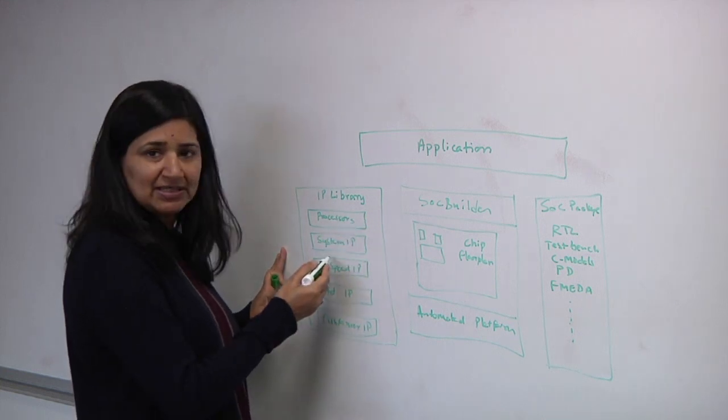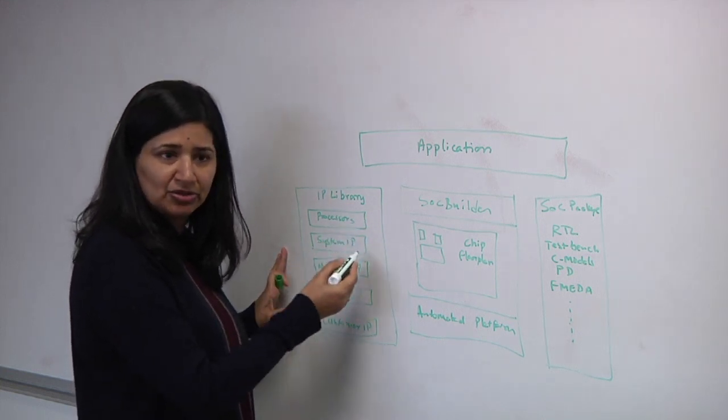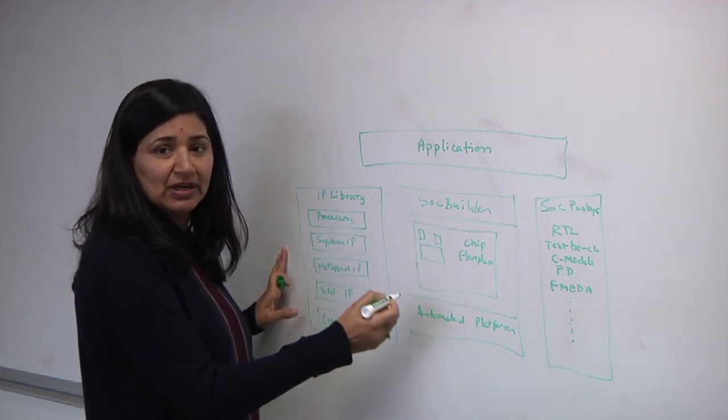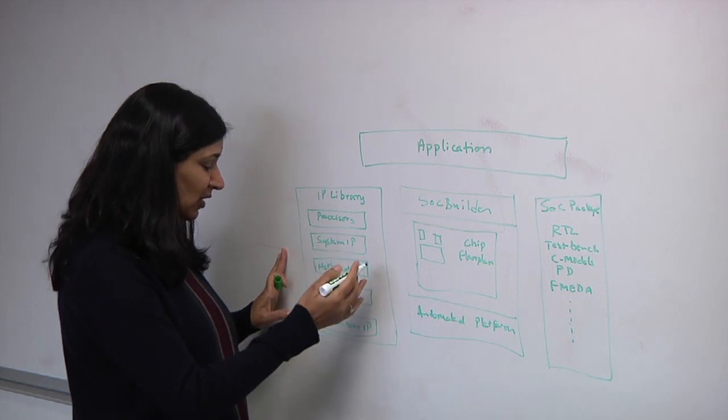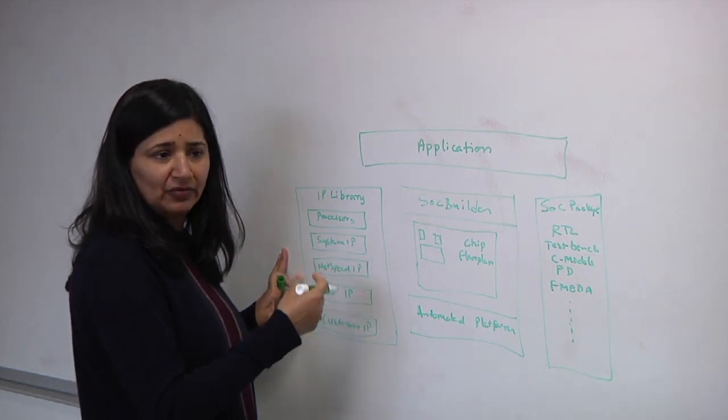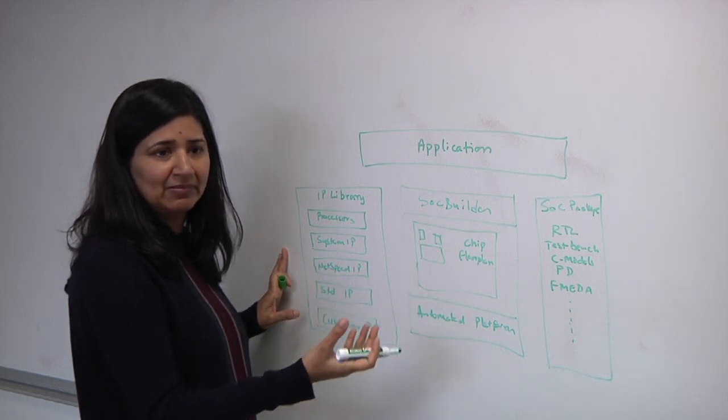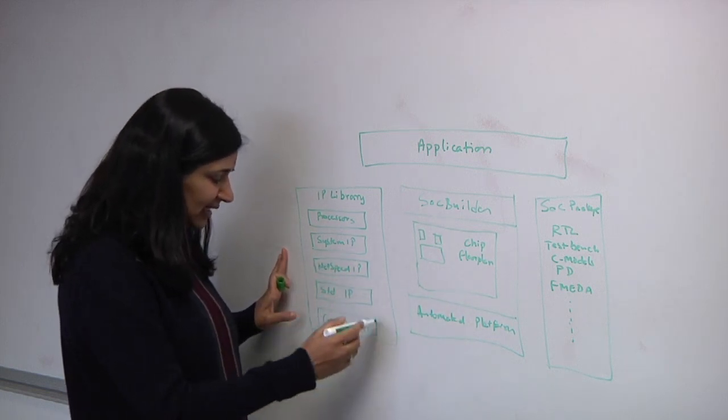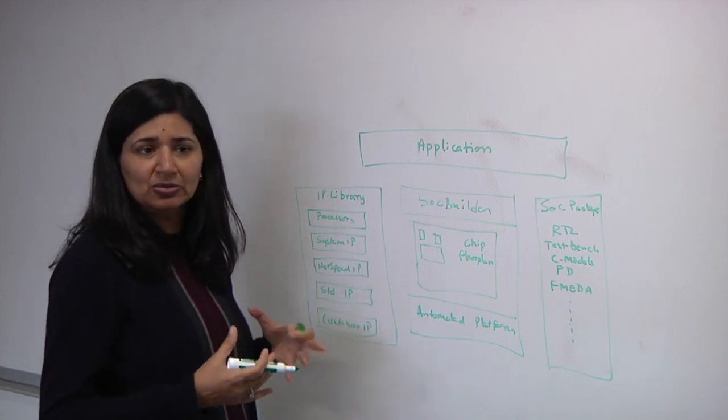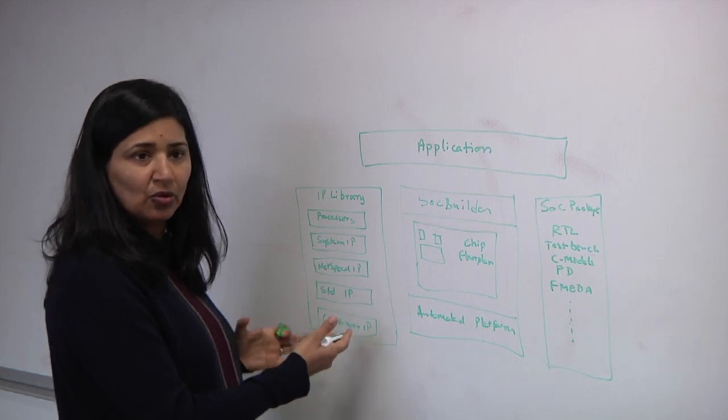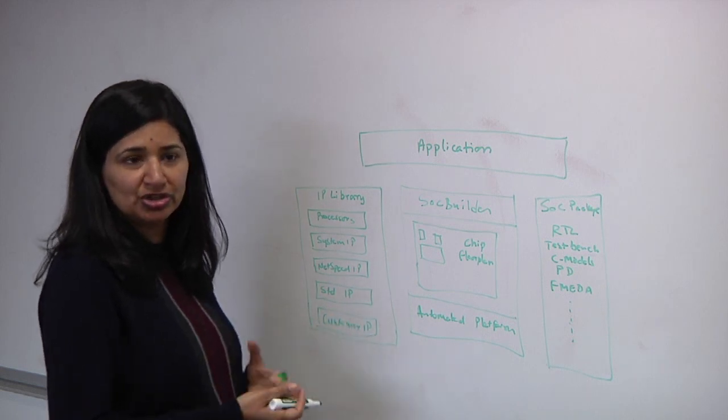Then you have system IP such as the MMU, the interrupt controllers, interconnect IP to connect up all these different IP blocks, then standard IP of the kind that we can get from our EDA manufacturers like PHYs, memory controllers, and finally every customer who's building an automotive chip is going to have their differentiated customized own proprietary IP that they don't want to share with anyone.